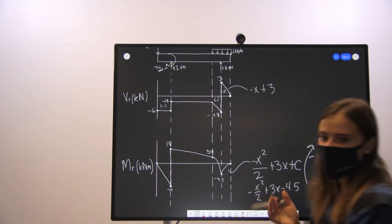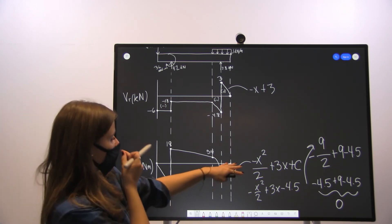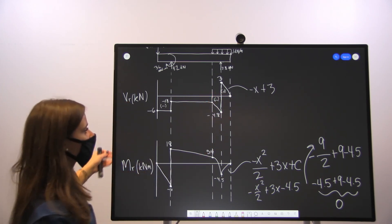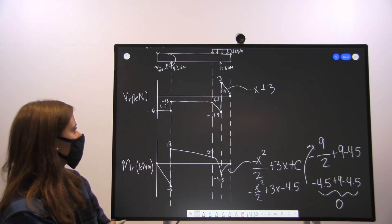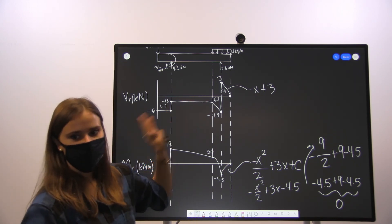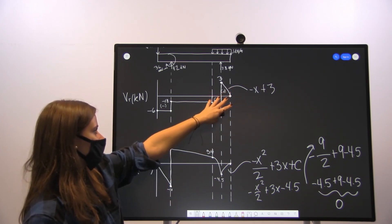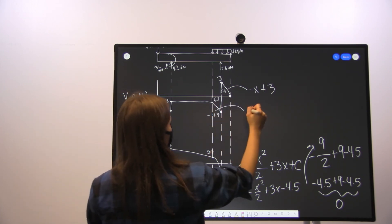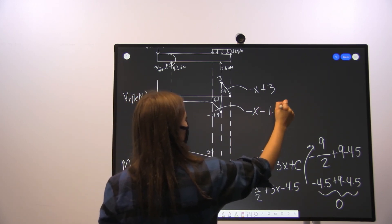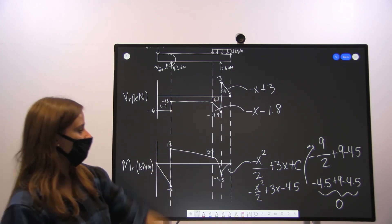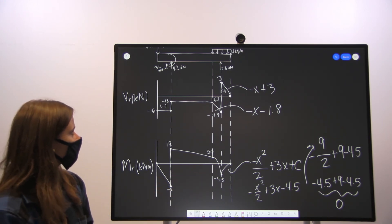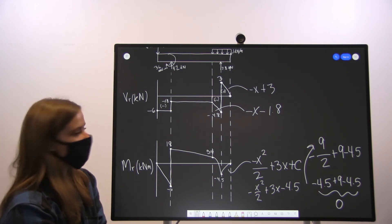That's a way to check you're getting the right values and ending at the right points. You can do the same thing for the other section — it's a trapezoidal sum, or you can use the integral method with the same approach, where the slope would be negative x minus 1.8. Running through it confirms you get negative 4.5, both sections end at zero, and you've got your completed shear and moment diagrams.